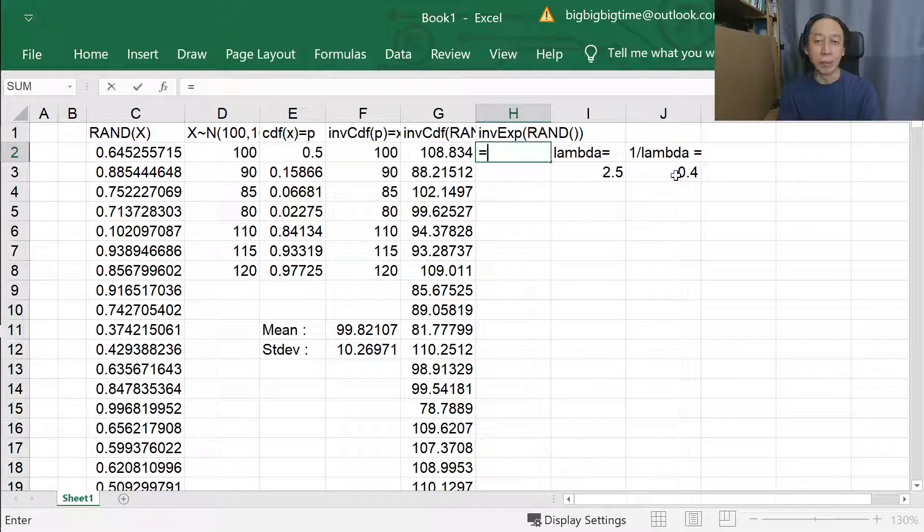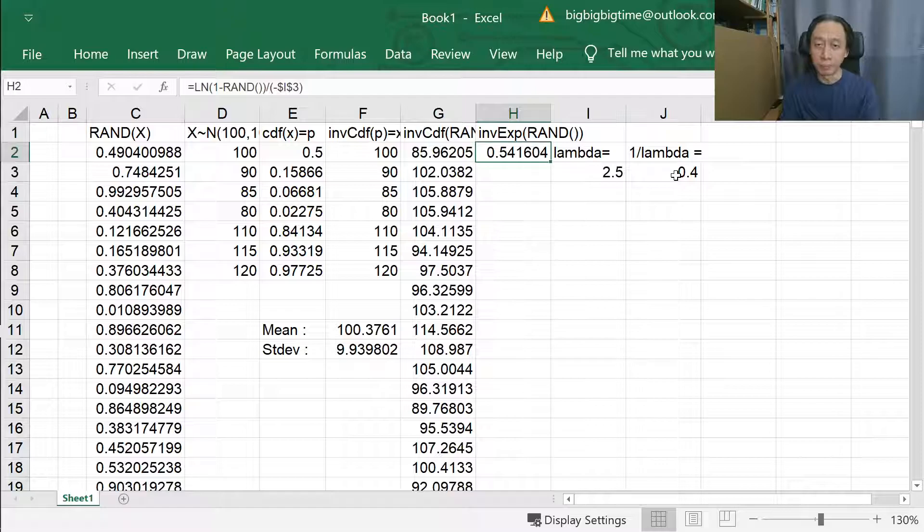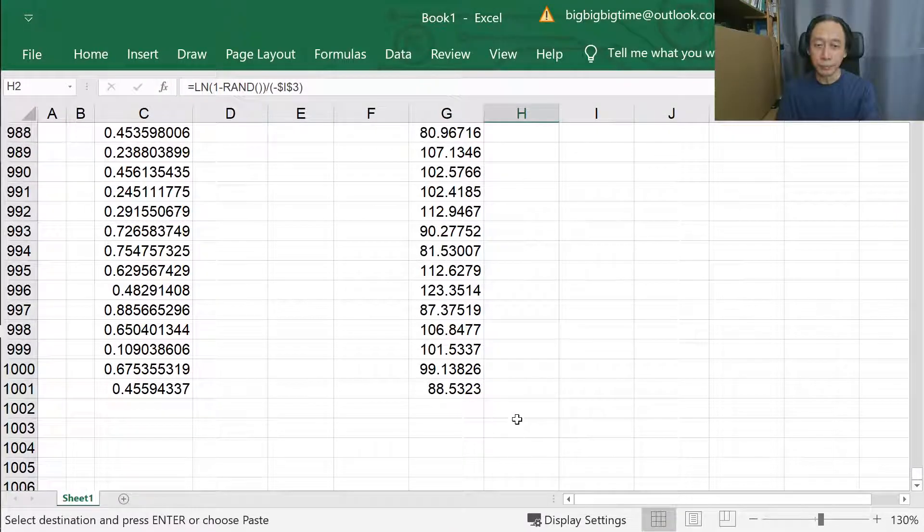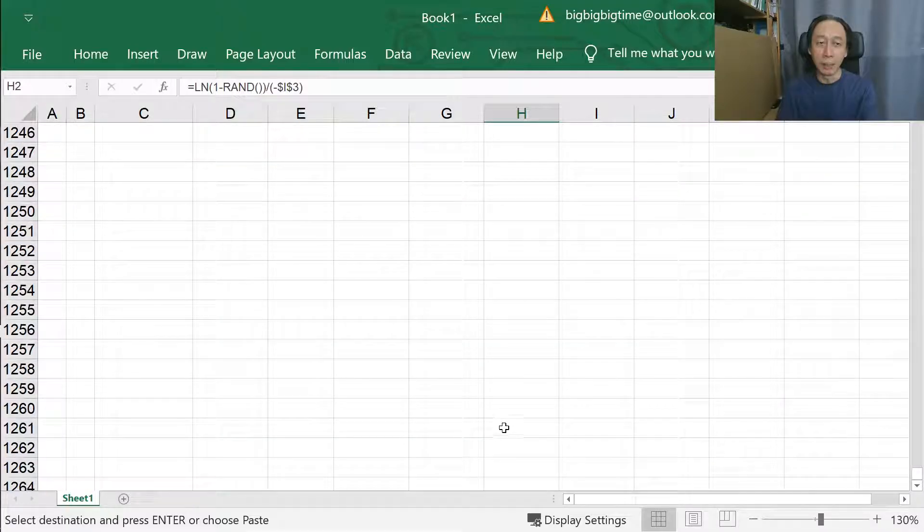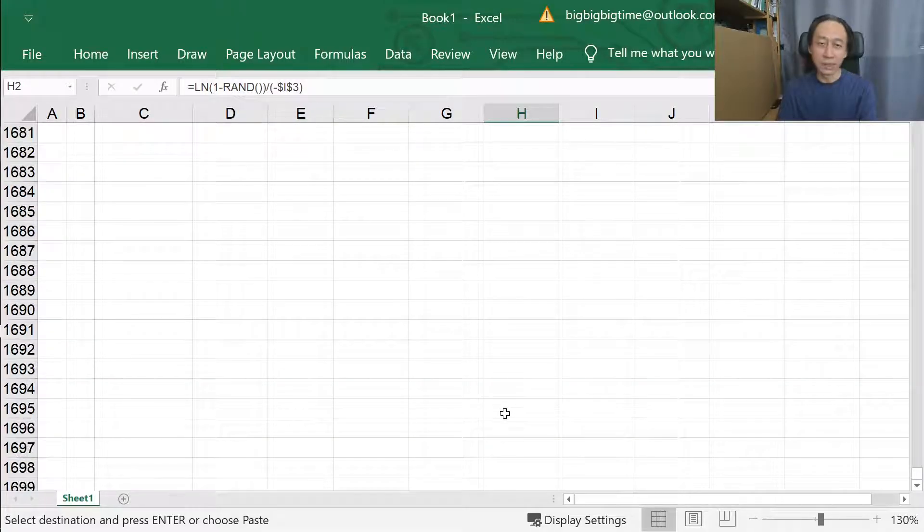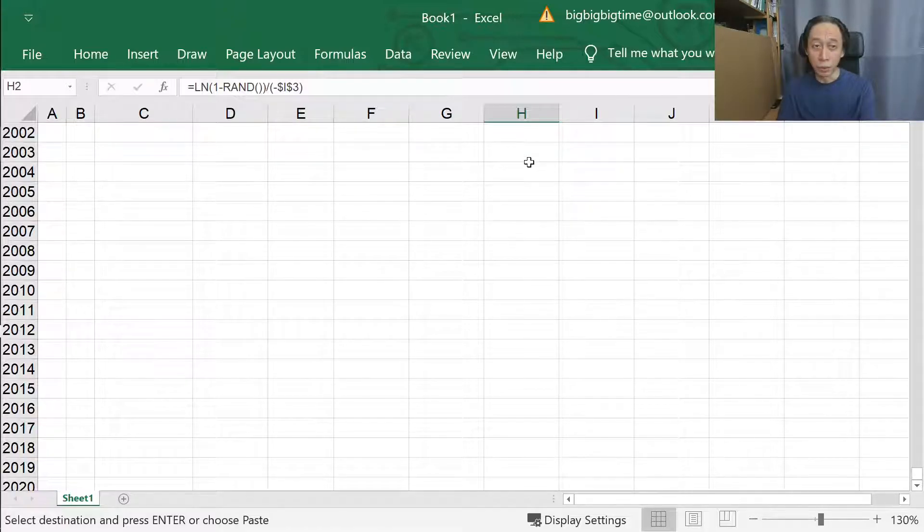What we're going to do is we're going to say ln of 1 minus rand divided by negative lambda, which is $i$3. The reason why I put $ is because I'm going to copy and paste and I don't want the blue cell to shift. We're going to generate, I don't want 1000, I want 2000 more random numbers. It's not going to slow down the computer systems because as we see, it is very efficiently generated. So we have 2001 here.